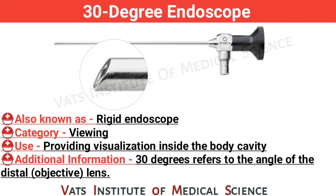30 degree endoscope, also known as rigid endoscope. Category: viewing. Use: providing visualization inside the body cavity. Additional information: 30 degrees refers to the angle of the distal objective lens.